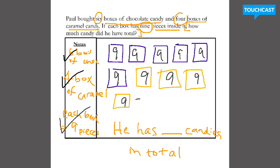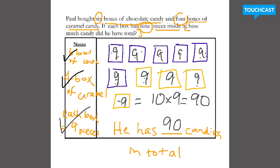So there are two ways I can figure out the total number. I could count the number of boxes — one, two, three, four, five, six, seven, eight, nine, ten — and multiply that by nine, which would give me 90. Or I could skip count by nines until I got to the total: nine, eighteen, twenty-seven, thirty-six, forty-five, fifty-four, sixty-three, seventy-two, eighty-one, ninety — so the total was ninety. Good job.